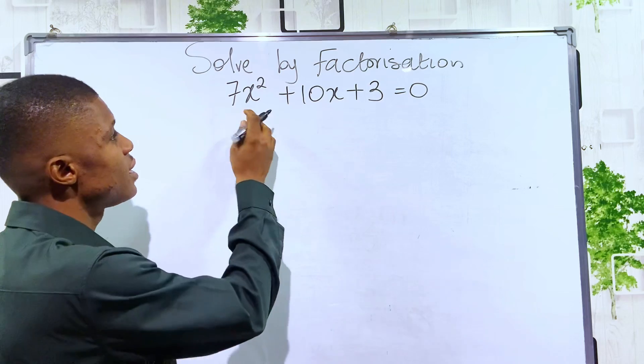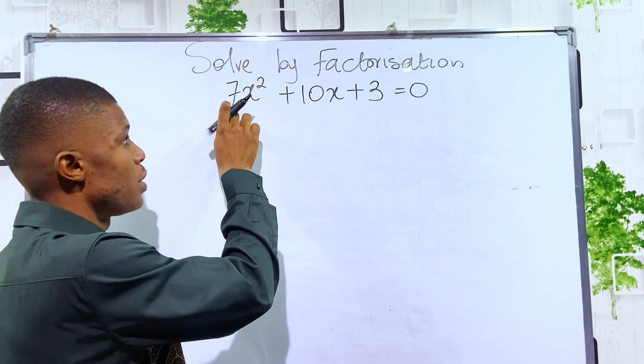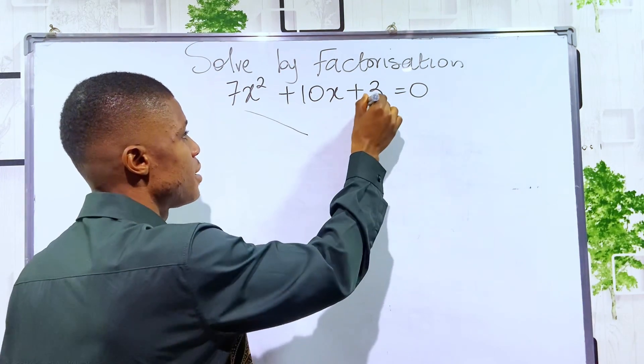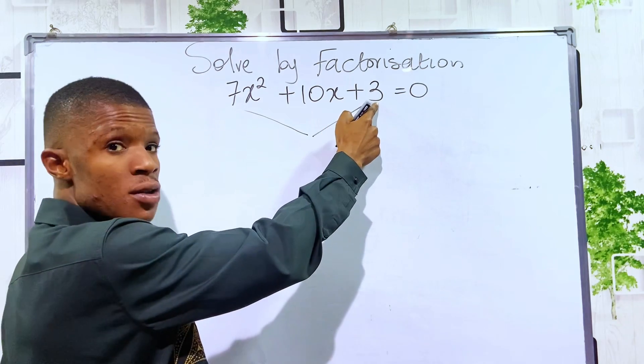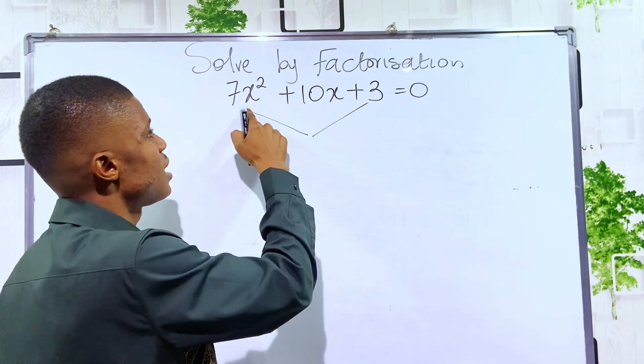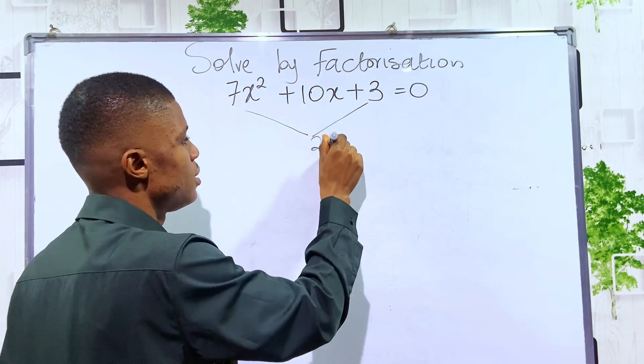For us to do that, since the leading coefficient is more than 1, we have 7. Multiply the leading coefficient and the constant together. So 7 times 3 is 21.